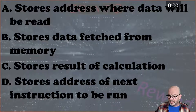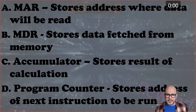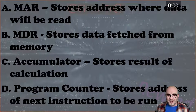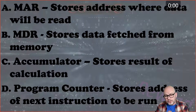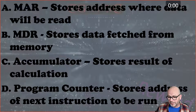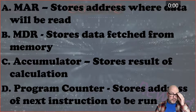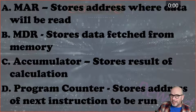OK, we've got a guess: A is MDR, C is accumulator, D is MDR. Well done for jumping in and taking a risk. So A is actually the MAR - the address where the data will be read. B is the MDR, so you've got them the wrong way around. C is the accumulator, and D is the program counter. The program counter stores the address of the next instruction to be run. So a bit more work to go away and learn those ones - memory registers, they love that in the exam.